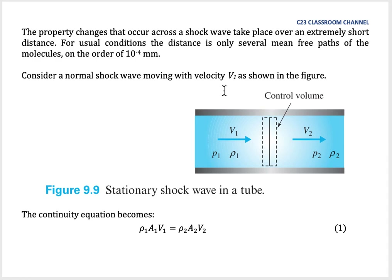Consider a normal shock wave moving with velocity V1 as shown in the figure. We have a constant-diameter tube, and we supply a very high velocity gas from left to right. Because the velocity of this gas exceeds Mach number 1, a shock wave occurs. After the shock wave, the velocity reduces to V2, with new pressure and density at point 2. This is a stationary shock wave in a tube, as used in experimental laboratory work.